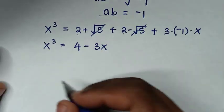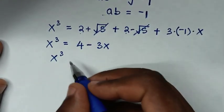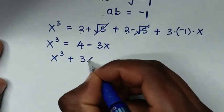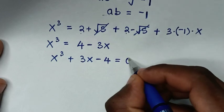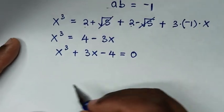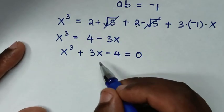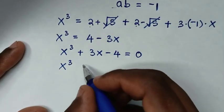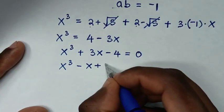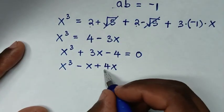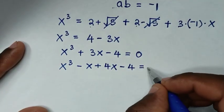Rearranging, x cubed plus 3x minus 4 equals 0. This cubic equation can be solved by grouping and factorization, so we rewrite it as x cubed minus x plus 4x minus 4 equals 0, since negative x plus 4x equals 3x.